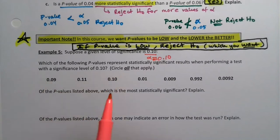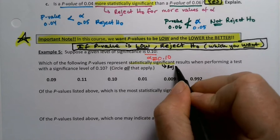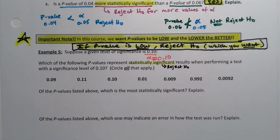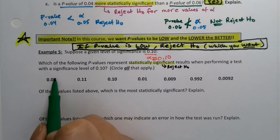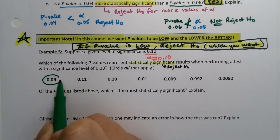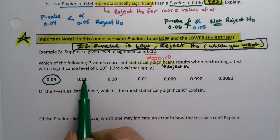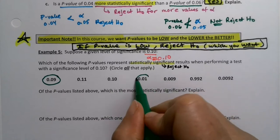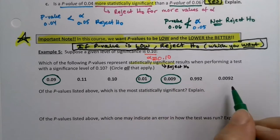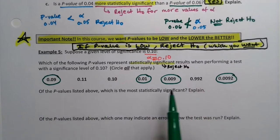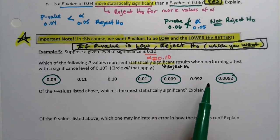Which of the following p-values would be statistically significant? That means you would get to reject H-naught, so circle the ones that would apply. So 0.09 would get circled because that p-value is less than alpha. When p-value is less than alpha, you get to reject H-naught. I would not circle 0.11 — that's not less than. 0.10 is not less than. 0.01, 0.009, and 0.0092 are all less than that alpha. So those four are all less than alpha and would all reject H-naught.